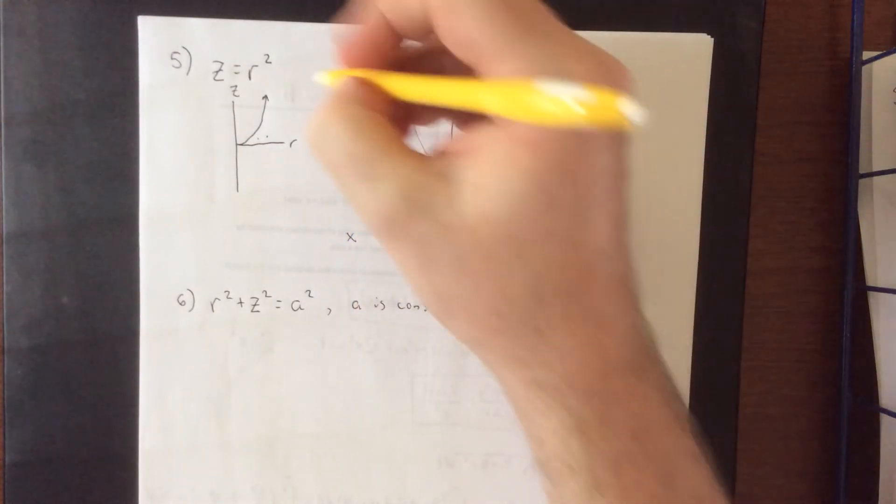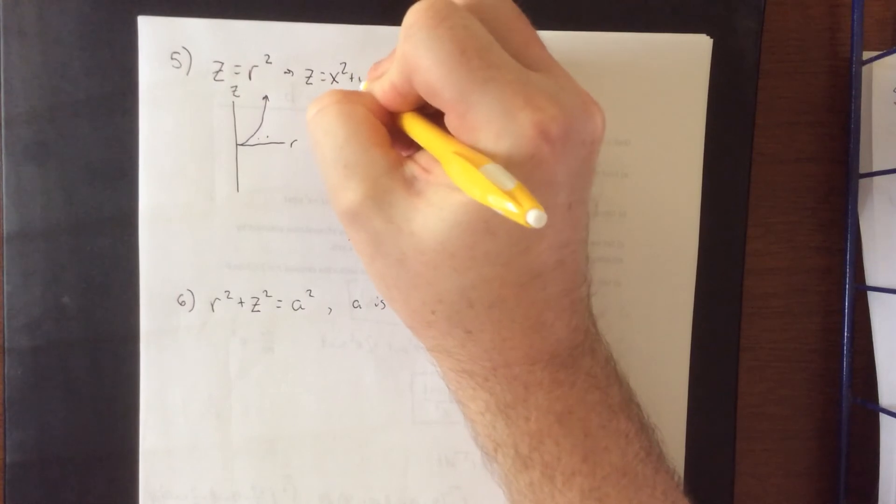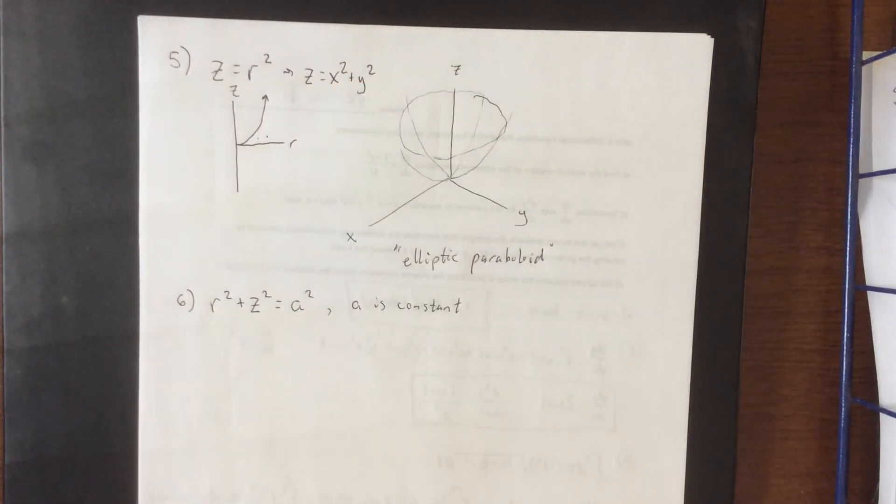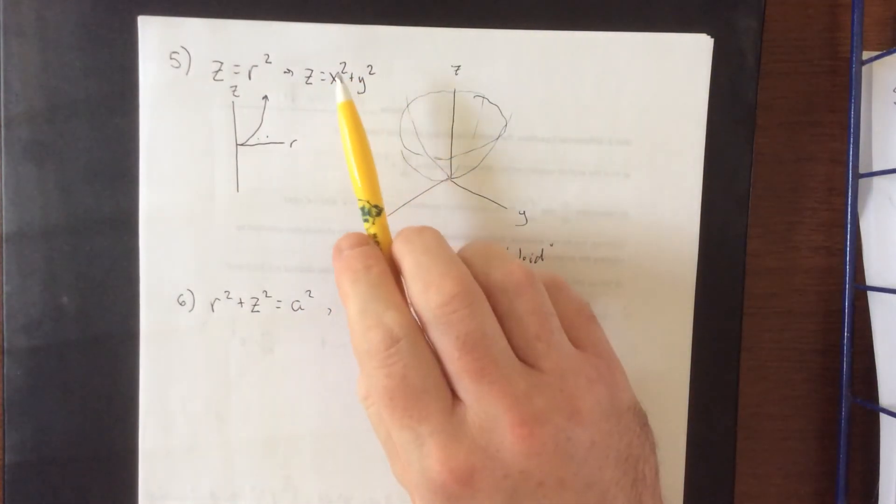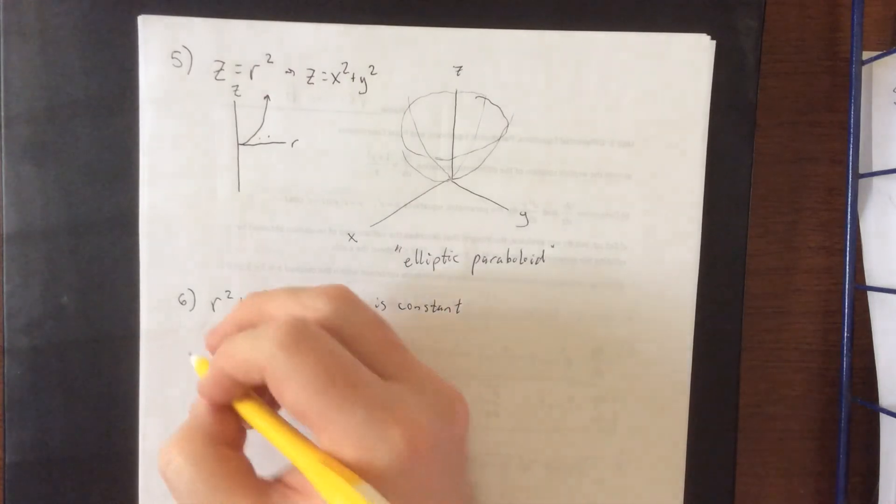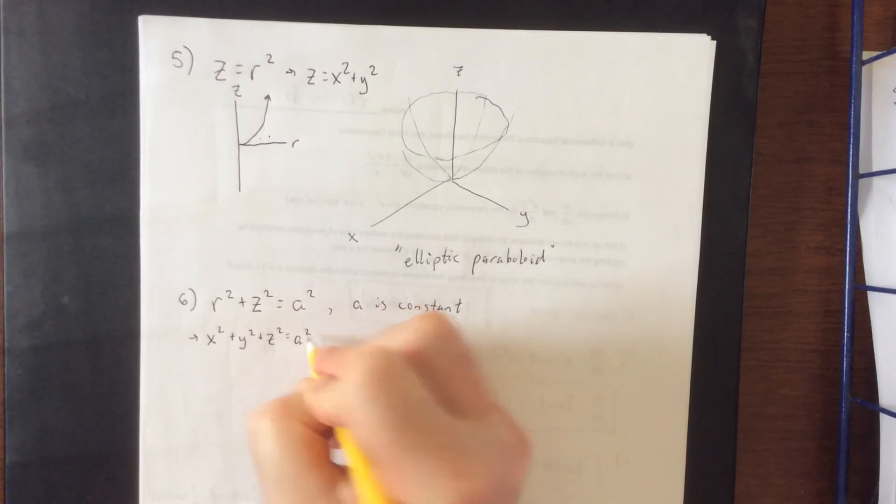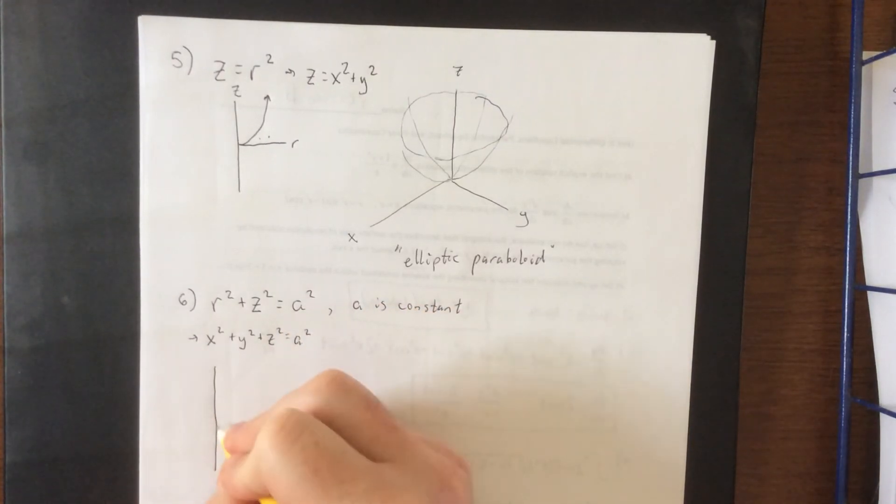We never actually converted the last one because it converts exceptionally easily. That's z is equal to x squared plus y squared. So x, y trace is a circle, x, z trace is a parabola, y, z trace is a parabola as well. Now this sphere also converts pretty nicely. This would be x squared plus y squared plus z squared is equal to a squared. And we know this to be a sphere.